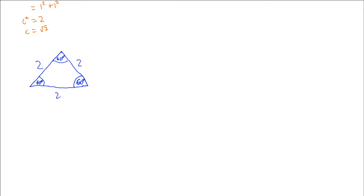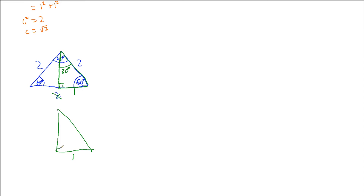If I split this triangle in half through one of the corners using a perpendicular bisector — splitting it right down the middle — that gives me a right angle. It also bisects the baseline, giving a side length of 1 on the green triangle I'm drawing here. It also splits the 60 degree angle at the top in half, giving us 30 degrees in the top corner. So the right angle triangle I can draw out separately has: 1 on the short base side, a right angle, 30 degrees in the top corner, 60 degrees in the bottom corner, and a hypotenuse of 2.